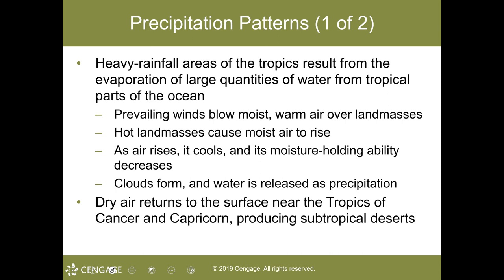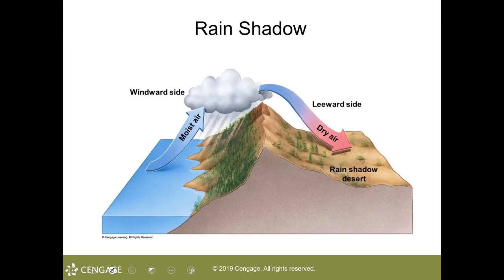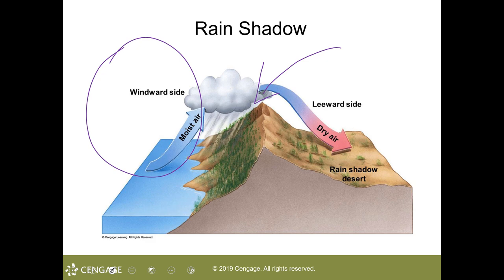Heavy rainfall in the tropics results from the evaporation of large quantities of water from the tropical parts of the ocean. Prevailing winds blow that moist warm air over land masses, and hot land masses cause moist air to rise — as it rises, it cools, moisture-holding ability decreases, clouds form, and rain falls. Dry air returns to the surface in the tropics of Cancer and Capricorn, producing sub-tropical deserts. Mountains force air to rise, which removes moisture — precipitation occurs on the windward slopes, and the other side of the mountain provides a rain shadow, hence the rain shadow effect.